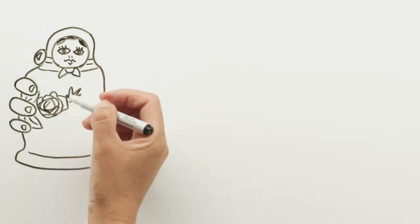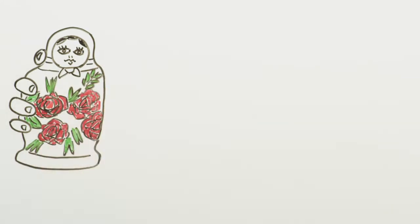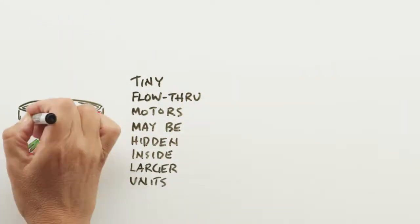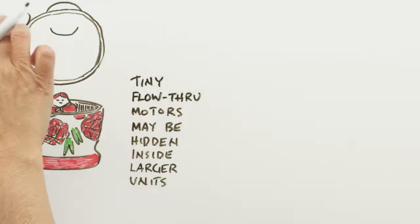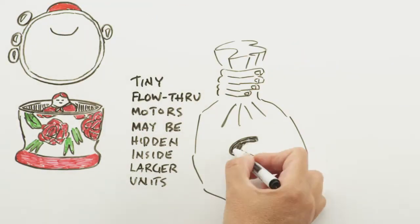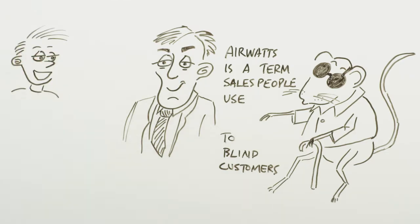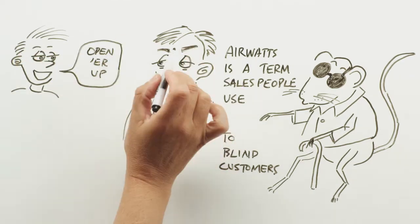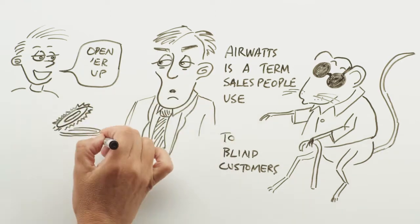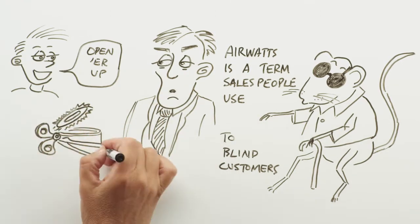For example, tiny flow-through motors may be hidden inside what appear to be large units. You could be paying a high price and getting less than what you bargained for. Before you make your purchase decision, ask the salesperson to open up the canister, so that you can see the motor for yourself.